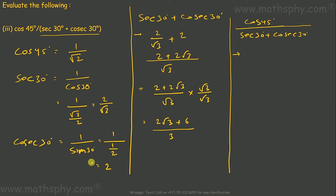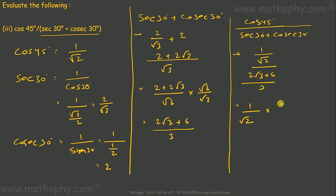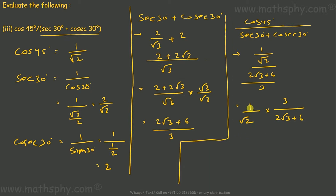Cos 45 is 1 over root 2. So we have cos 45 times (sec 30 plus cosec 30), which is 1 over root 2 times (2 root 3 plus 6) over 3. This gives 1 times (2 root 3 plus 6) over root 2 times 3, which is (2 root 3 plus 6) over 3 root 2, or equivalently 3 over (6 root 2 plus 6 root 2 into root 2).